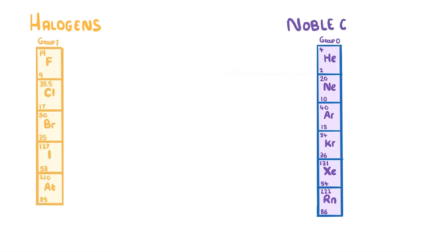In today's video we're going to take a look at both the Group 7 elements, known as halogens, and the Group 0 elements, known as the noble gases, and we'll run through the properties and the trends of each of them.